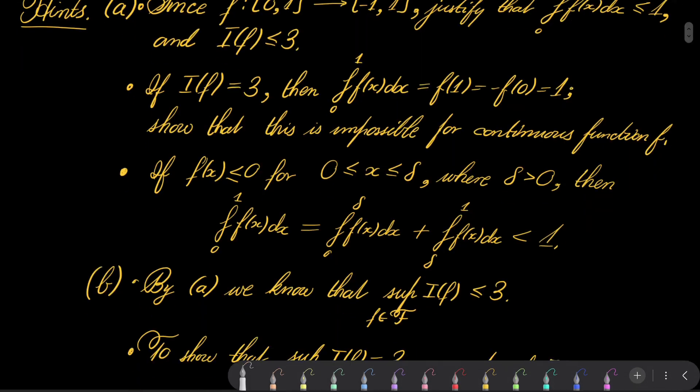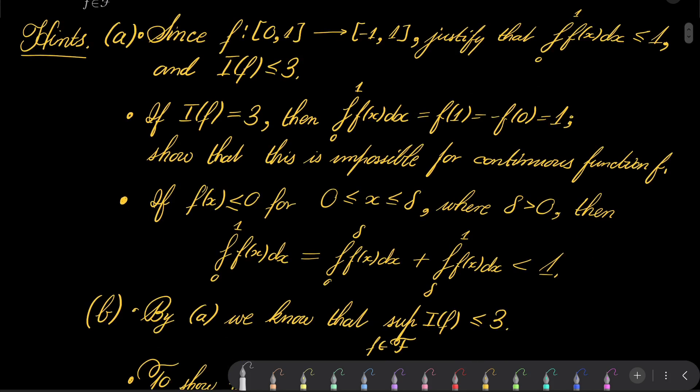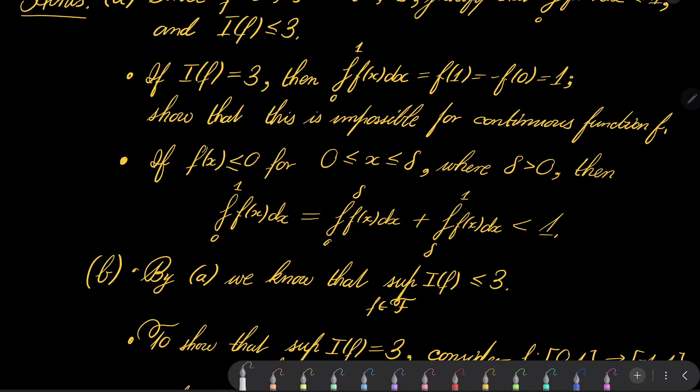First, part a: we wish to show that I(f) is strictly less than 3 for all elements f of our family. And then, part b, we wish to find the supremum over all elements of our family of I(f). It's a nice problem from calculus, mathematical analysis. Here are my hints. For part a, notice that since this maximum equals 1, our function goes from [0,1] into [-1,1]. Justify that our integral must be less than 1 and I(f) must be less than or equal 3.